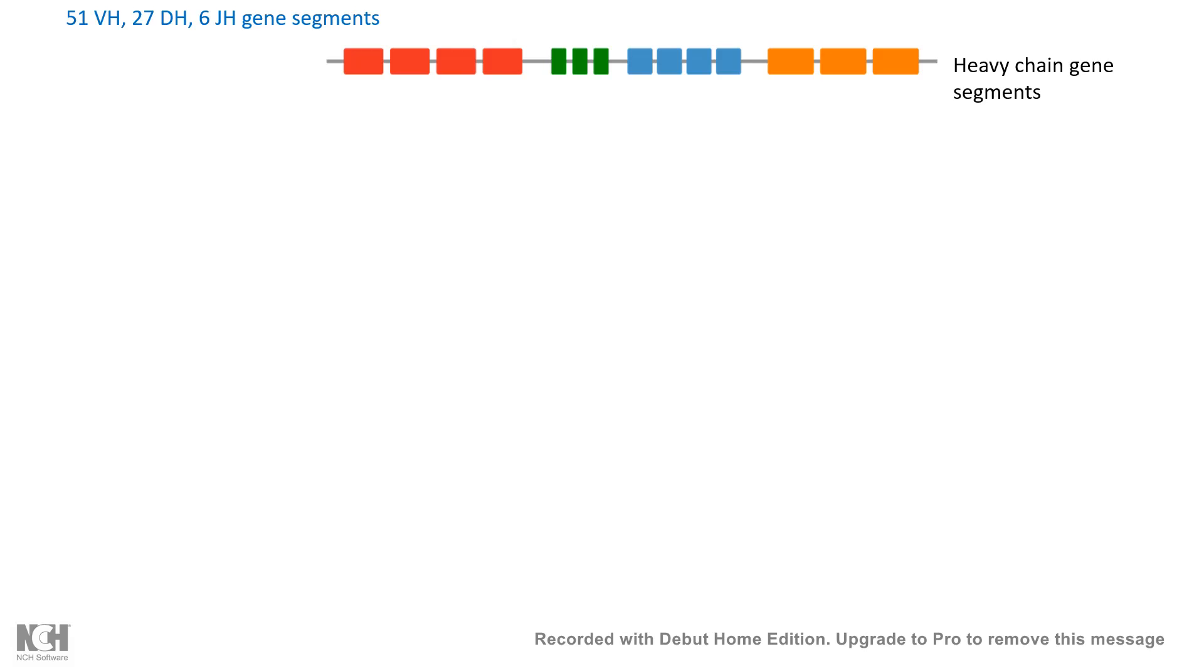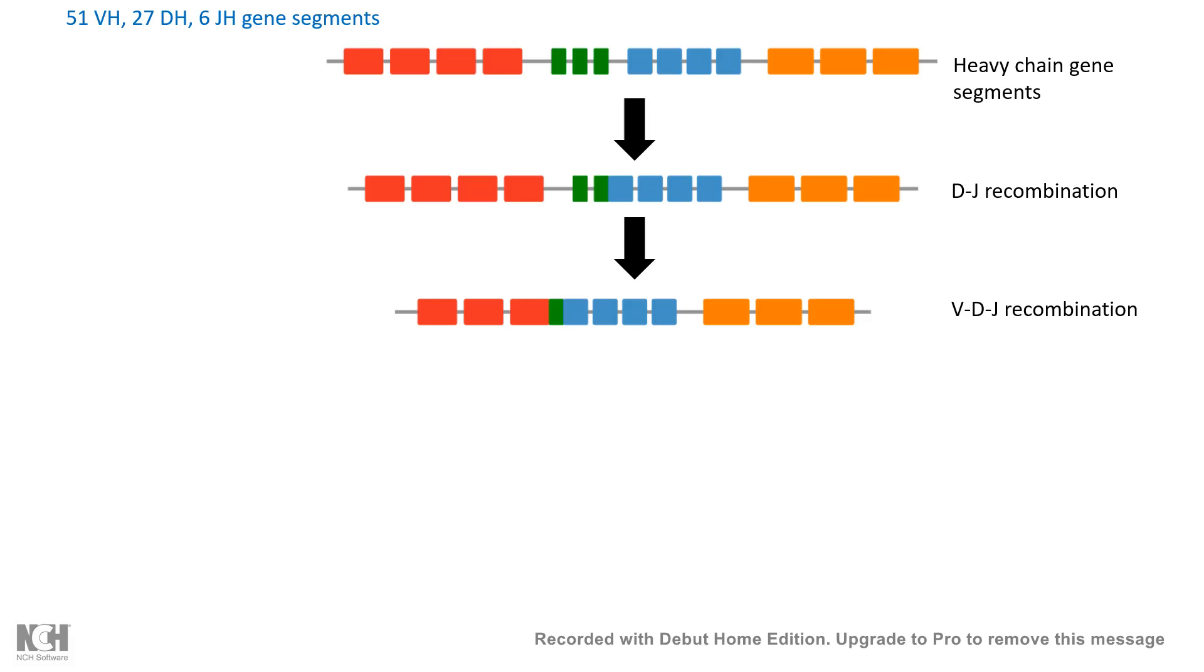What is the importance of having so many different segments? These segments can be joined in sequence. For example, the D and J segments can join by DJ recombination. Further, VDJ segments can be joined in the VDJ recombination process, creating different transcripts depending on which combinations are used, giving rise to the antibody heavy chain.